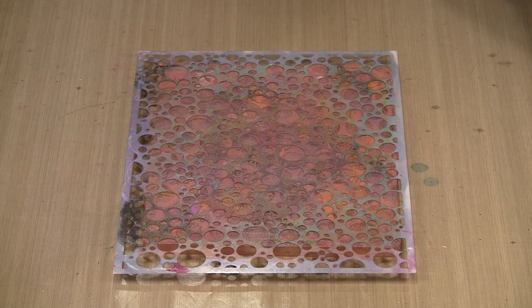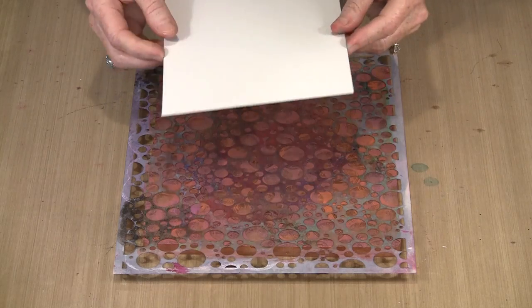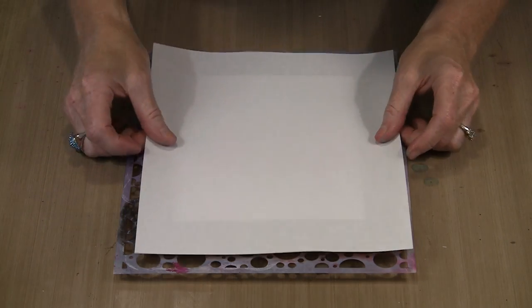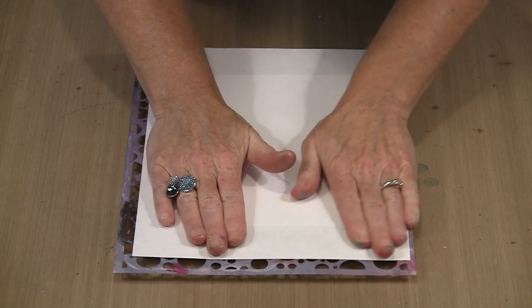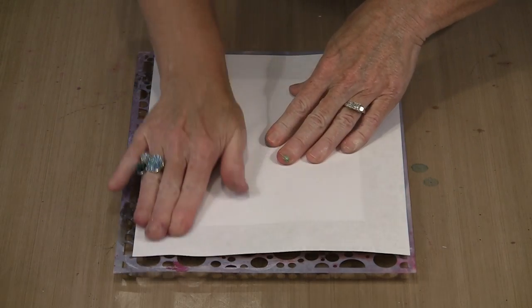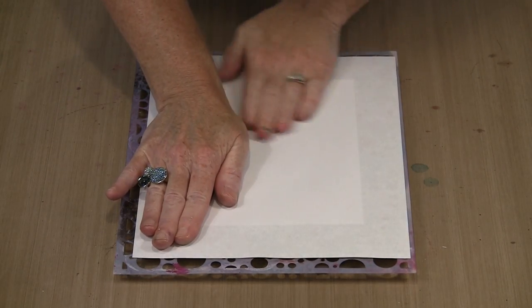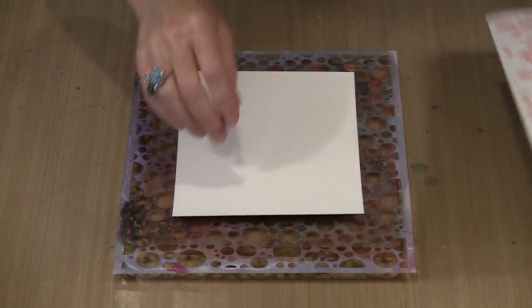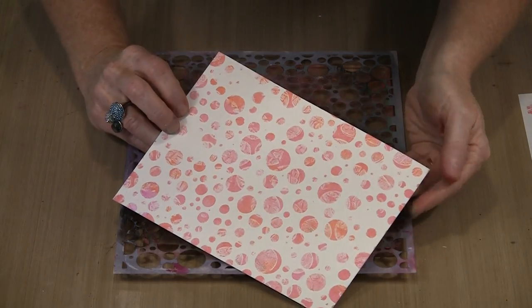I am going to just lay this on here. I am working with Strathmore's mixed media paper. This is the stuff that is pre-cut to 6 inch by 8 inches. Since I am working on a plate that is larger than the piece of paper, I am just going to use a scratch piece of paper like this to keep my hands relatively clean. I want to press through the openings of the stencil and pick up that paint.